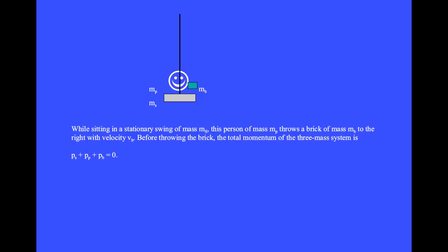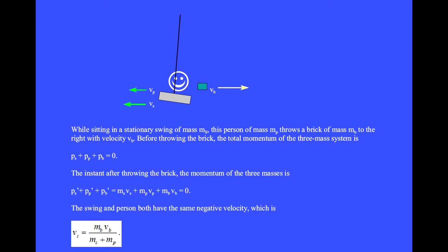A person is sitting in a stationary swing while holding a brick. The mass of the person is mp, the mass of the swing is ms, and the mass of the brick is mb. The person throws the brick to the right with velocity vb. Before throwing the brick, the total momentum of the three-mass system is zero, found by adding the momentum of the swing, plus the person, plus the brick.